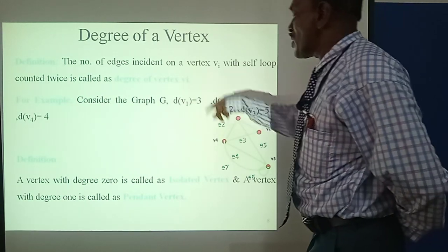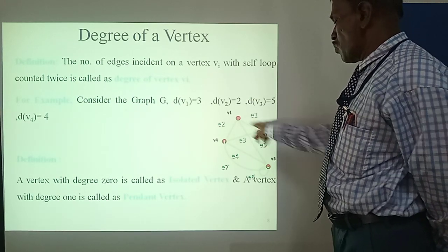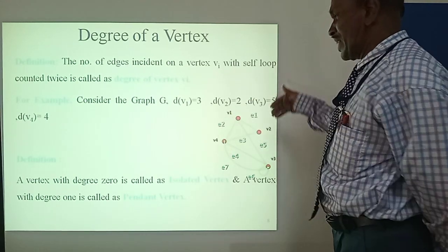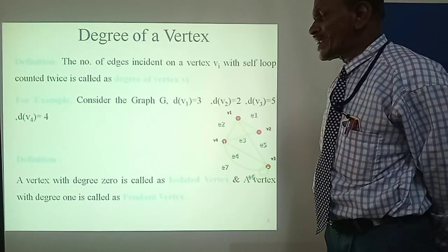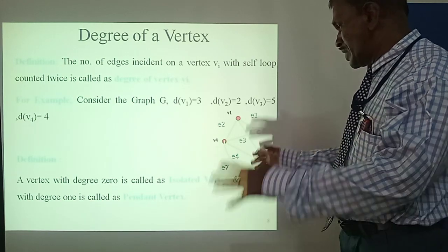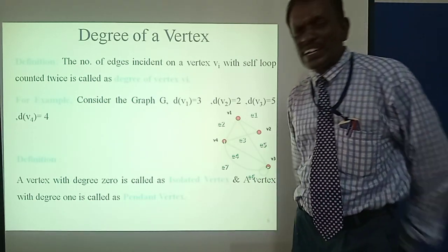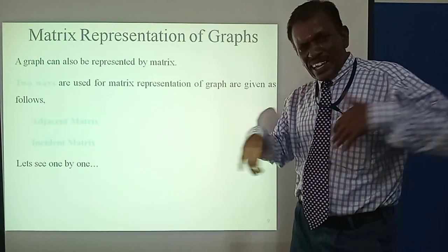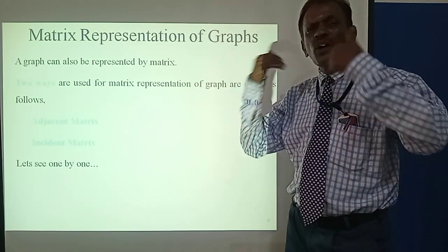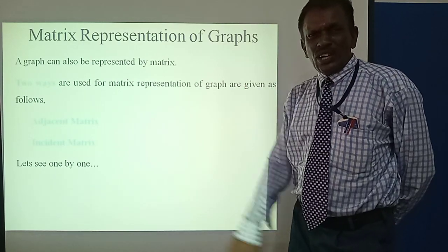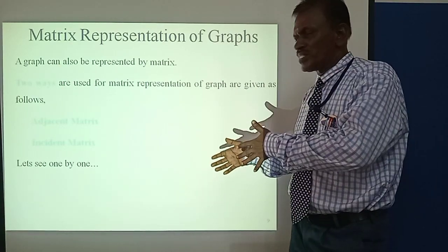So d(V1) equals 3 because V1 has 3 edges connected: 1, 2, 3. Similarly, d(V2) equals 2, and so on for V3, V4, etc. A vertex with degree 0 is called an isolated vertex. A vertex with degree 1 is called a pendant vertex.